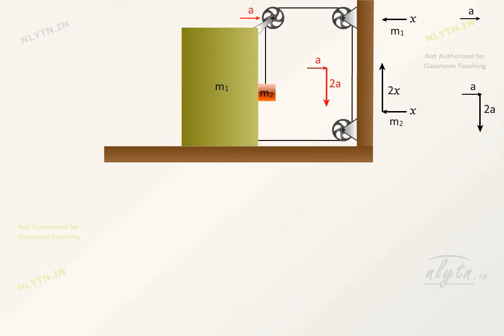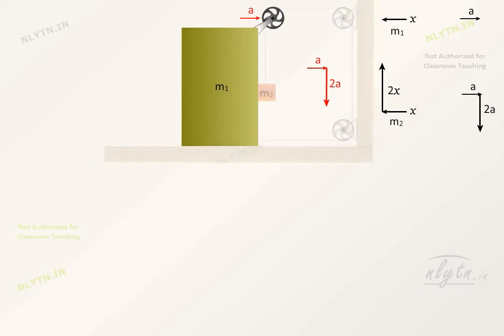Let us consider the free body diagram of m1 and m2. For m1 along with the pulley, we have a set of 3 tensions from the rope, normal reaction from m2, friction between m1 and m2 downwards, friction from ground towards left, and we have weight of m1 and normal reaction from ground.